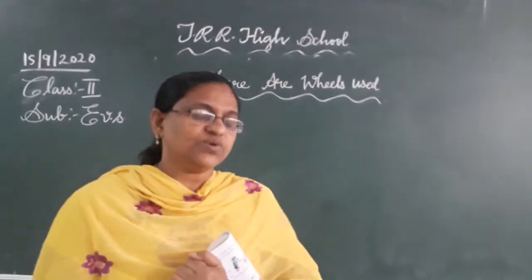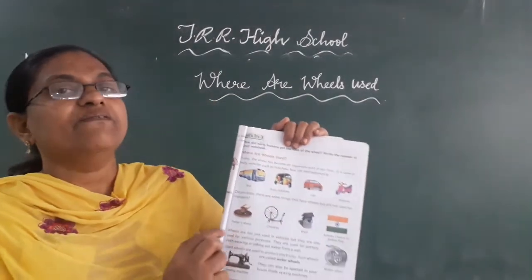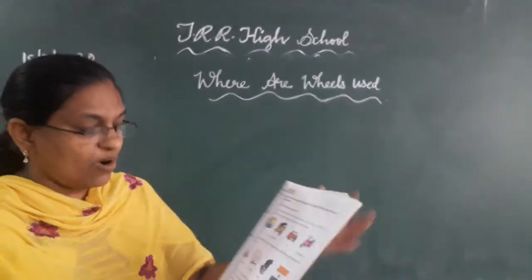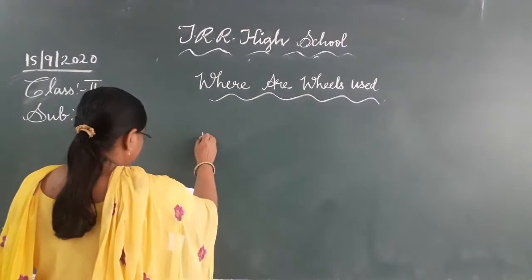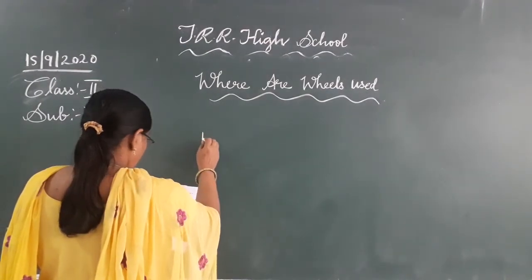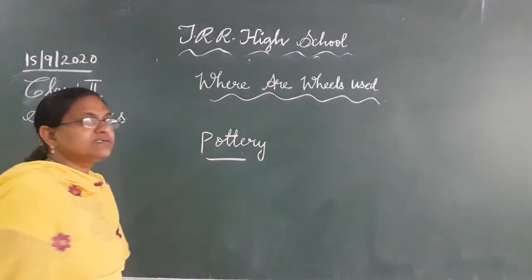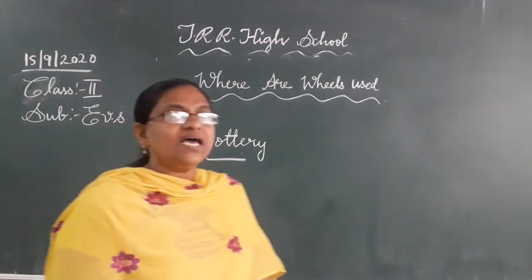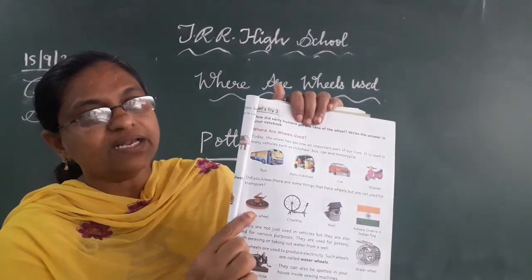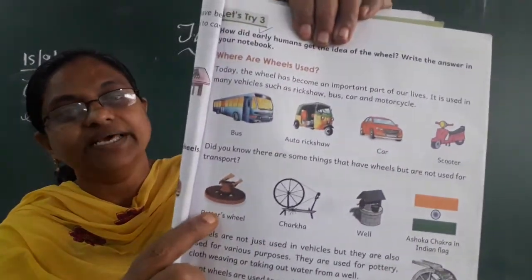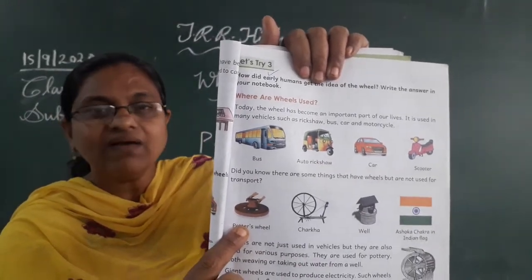For example, wheels are used in pottery. What is pottery? Pottery means the person who makes pots with clay. See, this is the pottery wheel. Without the wheel, we cannot make pots or vessels.